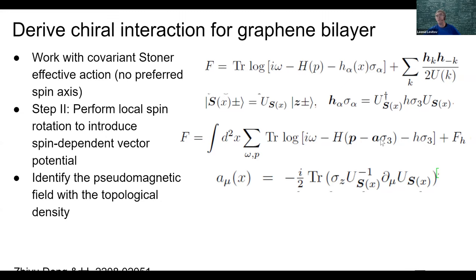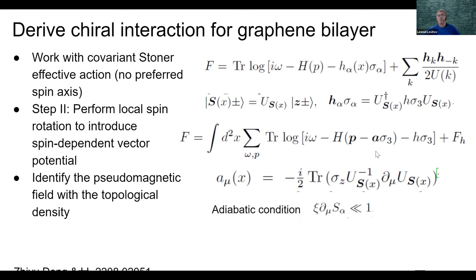Instead of just A·σ₃, there would be A₁σ₁ + A₂σ₂ + A₃σ₃, so this is completely general with no approximations. However, since we assume locally uniform spin polarization with orientation slowly varying in space, we can make an adiabatic approximation, ignoring the components of the vector potential that couple up-spin and down-spin bands.